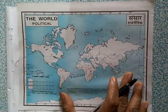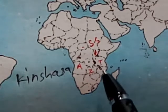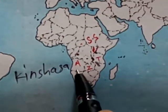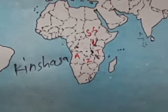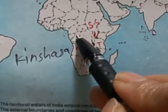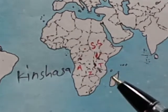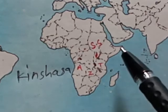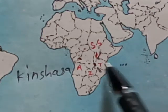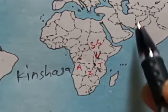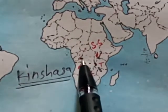Uganda, Rwanda, Tanzania, and Burundi are in the east, and the Republic of Congo is in the west. You can see these neighbouring countries on the map of Africa. The capital of DRC, Kinshasa, is also visible on the map.